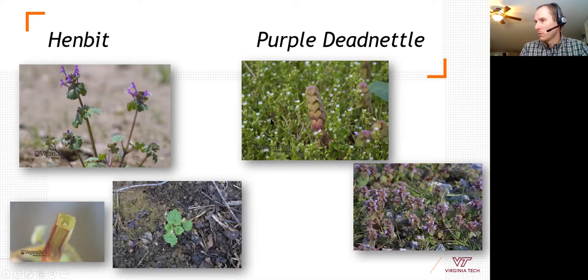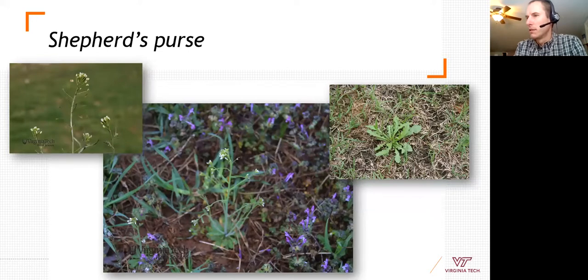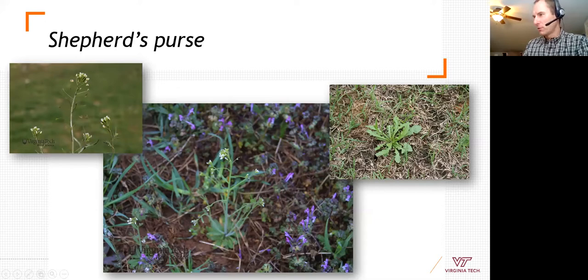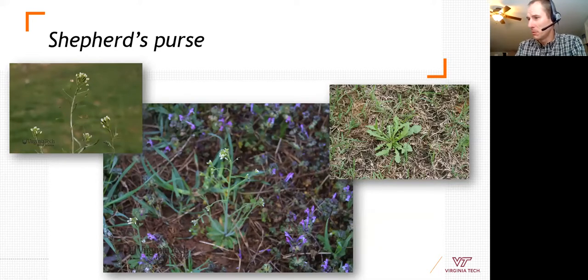Chickweed and purple dead nettle often grow together. Shepherd's purse has a distinctive heart-shaped seed head and typically gets 8–10 inches tall at most; it overwinters as a rosette and shoots up a seed head in spring. It can actually be difficult to identify as a rosette because there are so many similar winter annual rosettes — until that distinctive seed head appears.